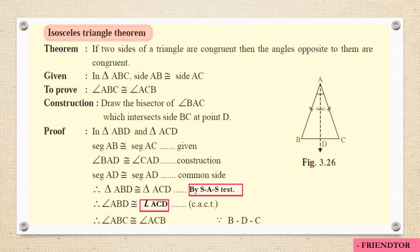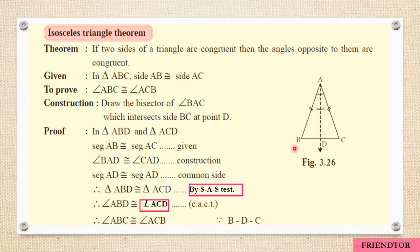The second thing we need to recall is the isosceles triangle theorem, which you may have seen in the congruence of triangles chapter. The theorem says: if two sides of a triangle are congruent, then the angles opposite to them are congruent. An isosceles triangle has a pair of equal sides. So if AB and AC are congruent, then angle ABC is congruent to angle ACB.